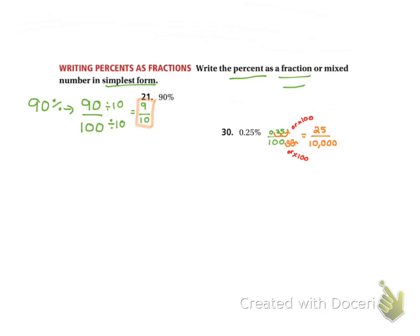So now we have 25 over 10,000. Both of those are divisible by 25. To get our simplest form, we have to have it in simplest form. So this would be a partially correct answer, but we've got to divide them by 25 to get our final correct answer. When I do that, I end up with 1 on the top and 400 on the bottom. So 1/400.